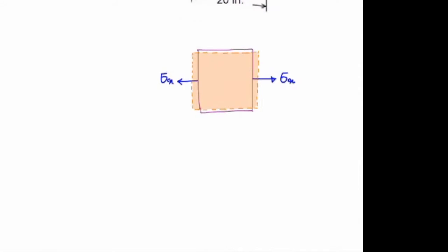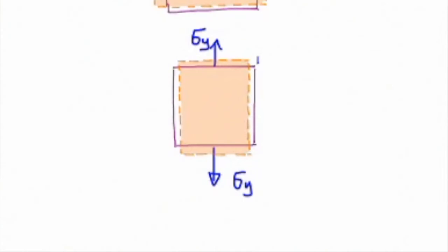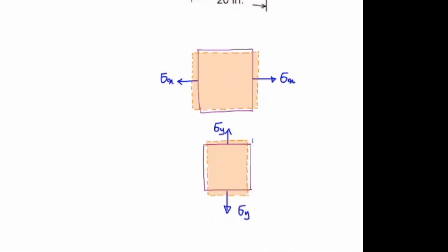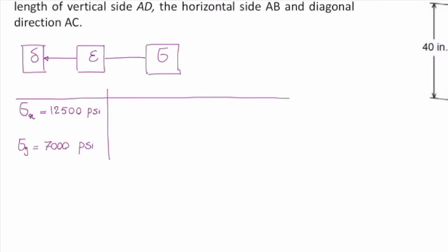Sigma Y here is 7,000 PSI. If I drew the element after I applied this load alone in that shape, that would be something like this. It stretches on the Y direction, but it shrinks on sides. That is the Poisson effect. So when I combine these two together, I have to take care of all deformations happening in this system.